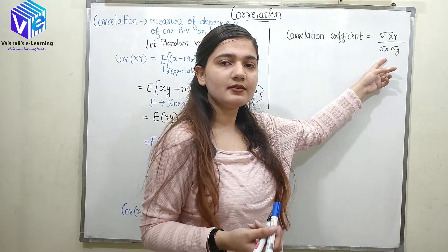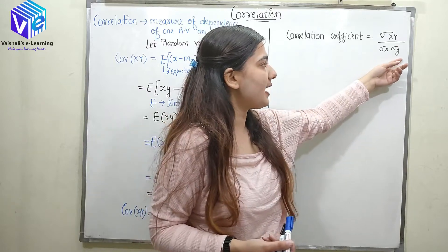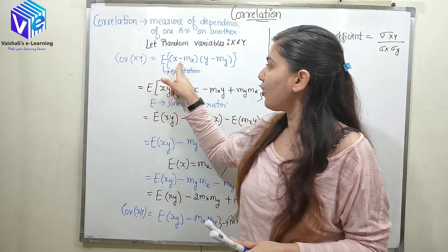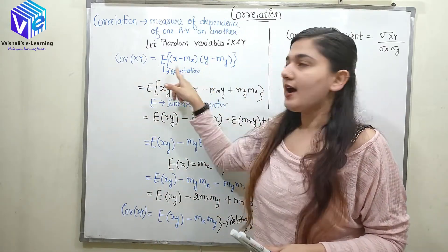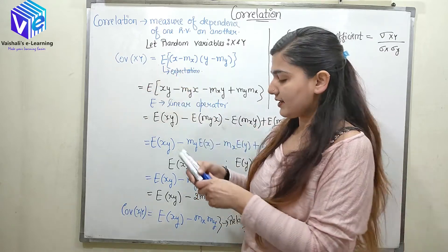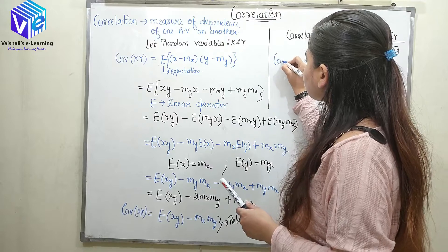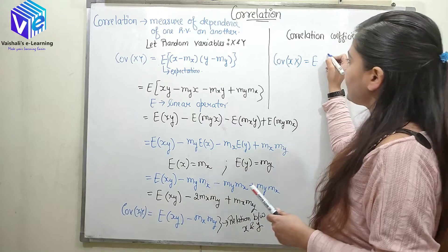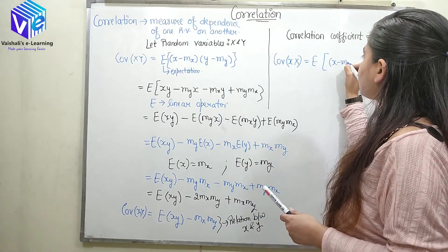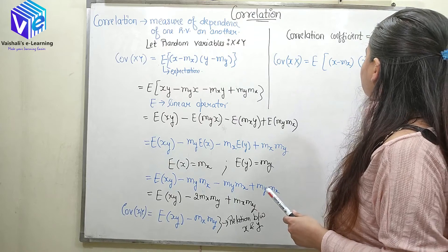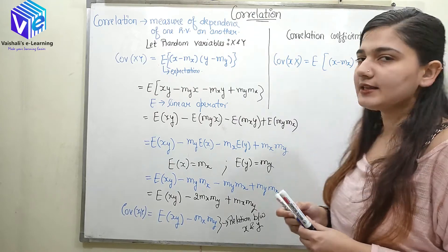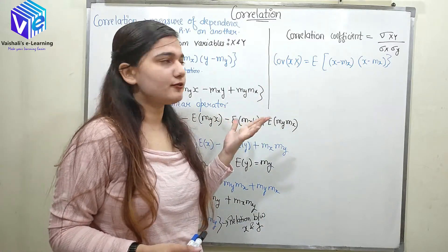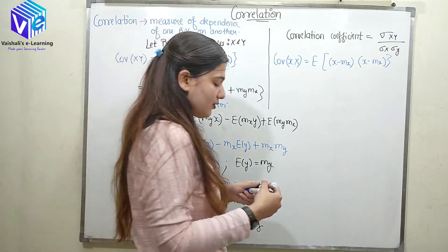Here σ_x is the autocorrelation of x and σ_y is the autocorrelation of y. Autocorrelation is found by taking the covariance of x with itself: Cov(x, x) = E[(x − m_x)(x − m_x)]. So instead of y, we use x again — that is called autocorrelation. I hope you are now clear on what autocorrelation is and how to find the correlation coefficient.